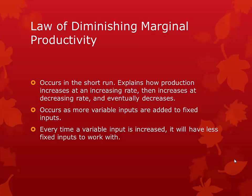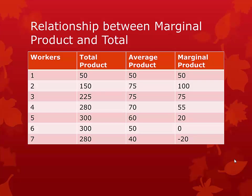Logically, a firm will never hire at the point where output starts to decrease. This table shows how marginal product relates to total product. Notice at the second worker, the total output is 150, and at the first worker, output is 50. This change in product is 100, so the marginal product for the second worker is 100. Notice that this is different than the average product — average product is just the average product each worker produces.